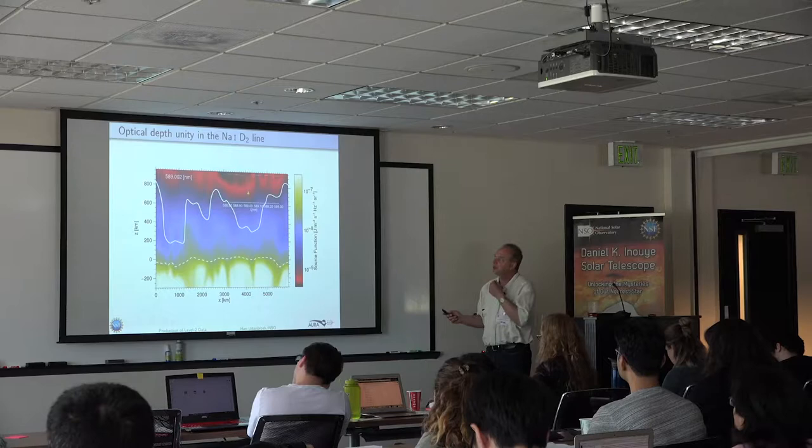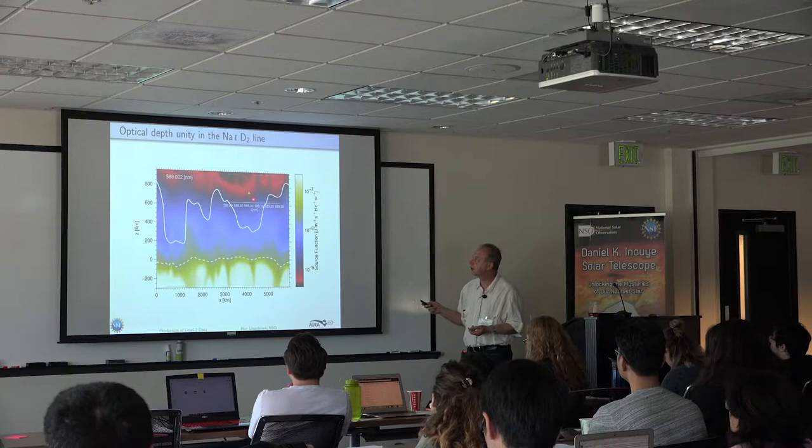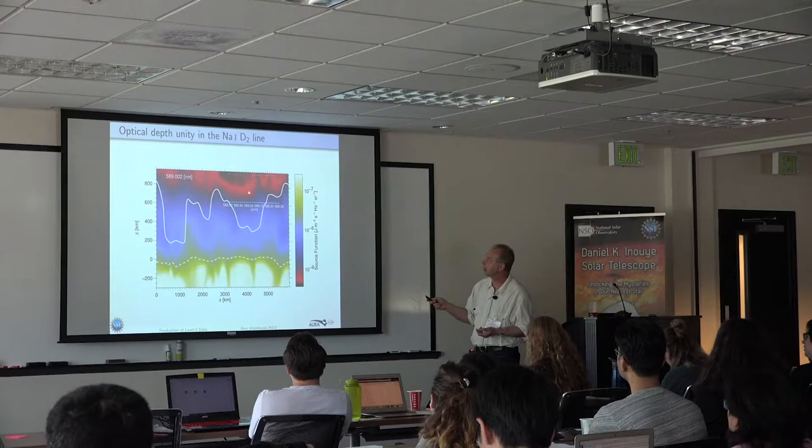This formation height at optical depth unity is not constant for a given line. For instance, for one of the sodium D lines, this is the optical depth in the line core — a vertical slice through the solar atmosphere showing granules that are hot, cooler above, and even cooler higher up. If you apply Eddington-Barbier, the intensity at this wavelength in the line is approximately the source function at this height. The height from which you receive information in the core of this line varies wildly through the atmosphere by hundreds of kilometers.